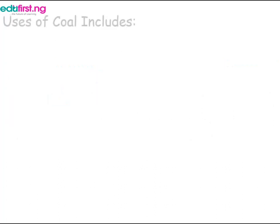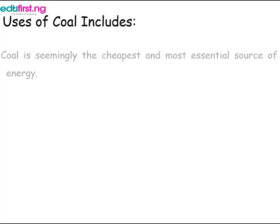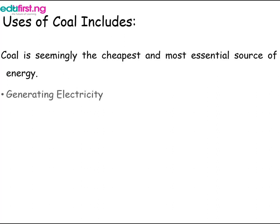Now let's go into the major uses of coal. Coal is considered the most available or cheapest form of energy. The first use is in generating electricity. Electricity is something that is inevitable in our everyday life. Coal is generally used in power generation to produce electricity — the coal is burned at a very high temperature, turned into steam, which is used to turn turbines. These turbines are the basis of our electricity generation.